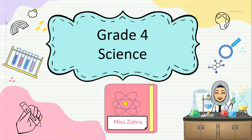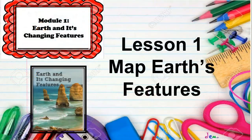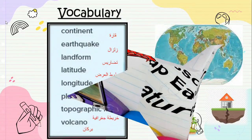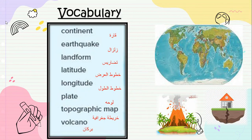Hi everyone, this is Miss Zahra. Today we are going to be reviewing Lesson 1: Map Earth's Features from Unit 3. The important vocabulary from this lesson is: continent, earthquake, landform, latitude, longitude, plate, topographic map, and volcano. We will be reviewing these words in detail and looking at some examples of landforms and some questions that may come in your quiz.